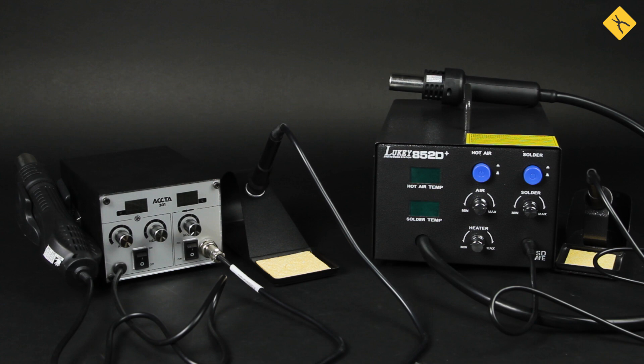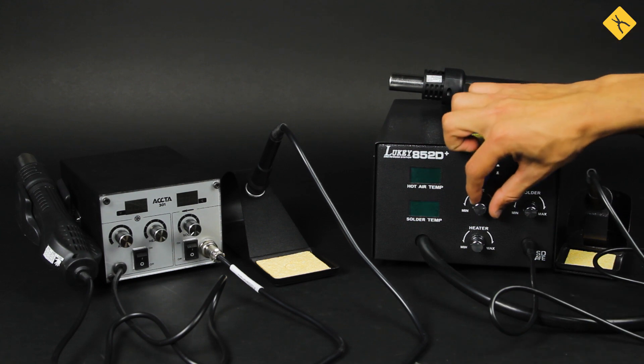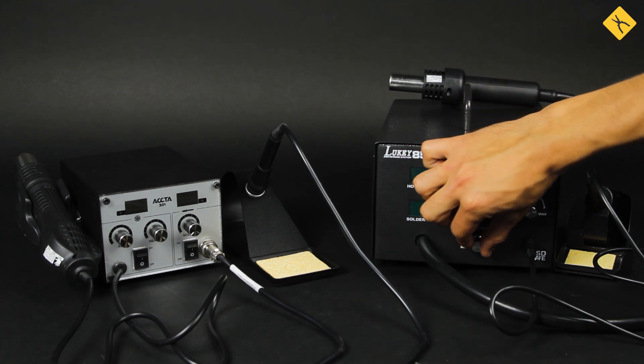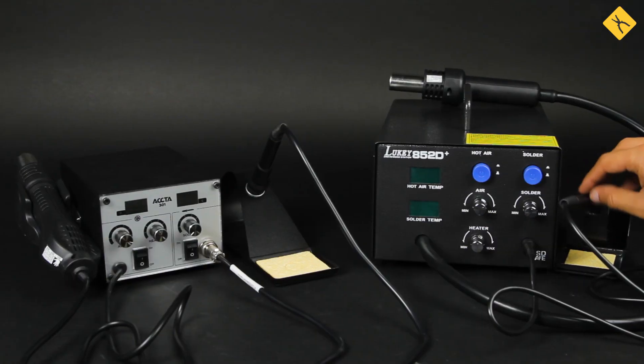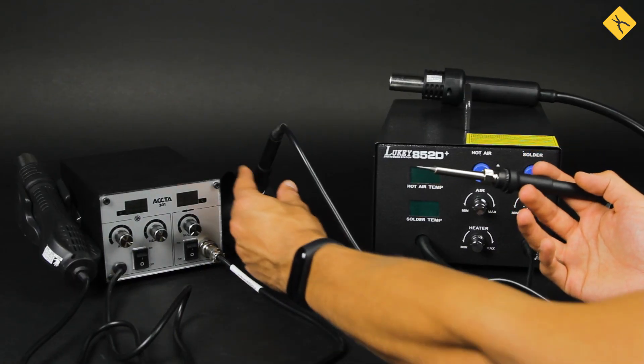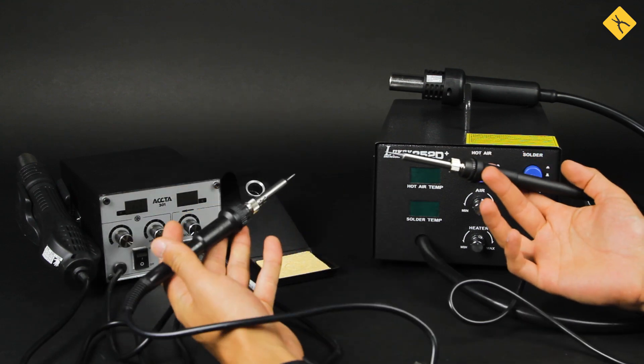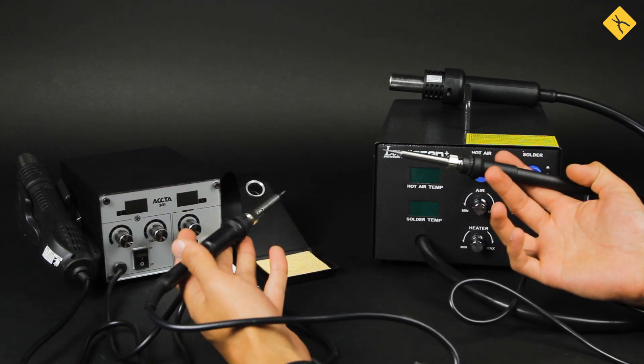The hot air gun soldering stations are very easy in operation. You can adjust the airflow and the temperature of the hot air gun as well as the temperature of the soldering tip. Like the regular contact soldering stations, the hot air gun ones come together with soldering iron with various soldering tips of different power.